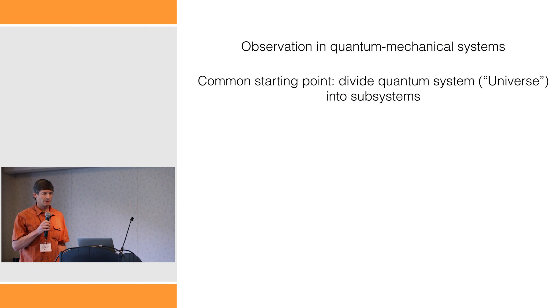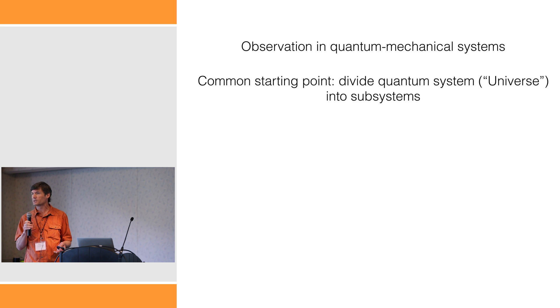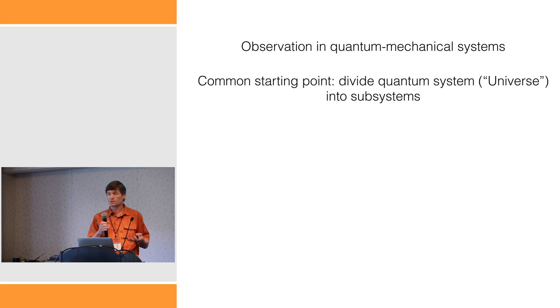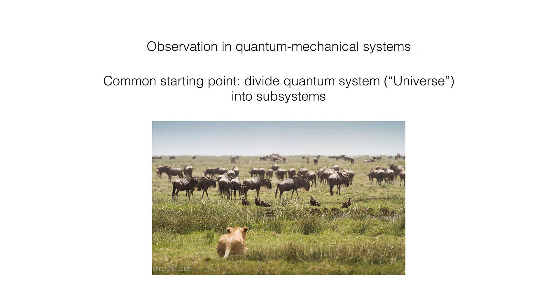Let's think about the subject of observation and observables in quantum mechanical systems. One of the essential starting points is to take a quantum system — let's call it the universe or whatever quantum system you're considering — and divide it into subsystems. That kind of division is important for describing observation, as illustrated by a picture of a good observing situation, where we maintain a healthy division between the lion and the observers. If we don't maintain that healthy division, we don't have a good observing situation.